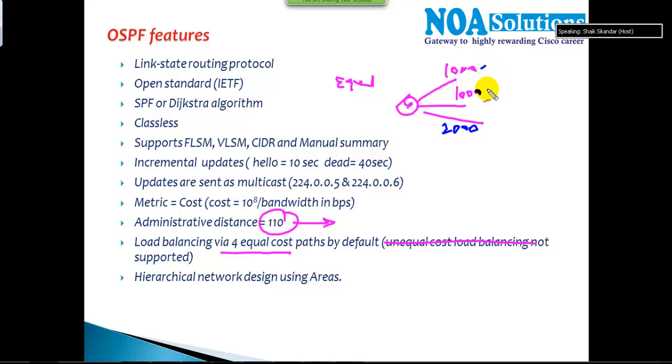Both routes will be used to forward the traffic. That's what we call equal cost load balancing. It's going to support up to four equal paths. Then it's going to use some hierarchical design called areas.